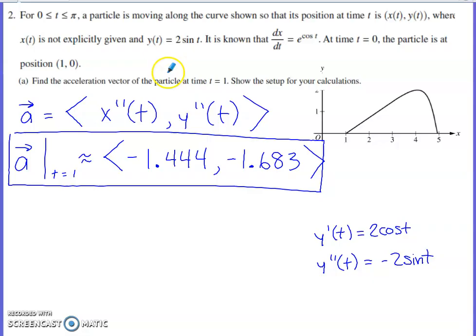Part A says find the acceleration vector of the particle at time one. Show the setup for your calculations. This is a calculator question. As far as showing the setup goes, you need to show that the acceleration vector would be the second derivative of x with respect to t and the second derivative of y with respect to t.